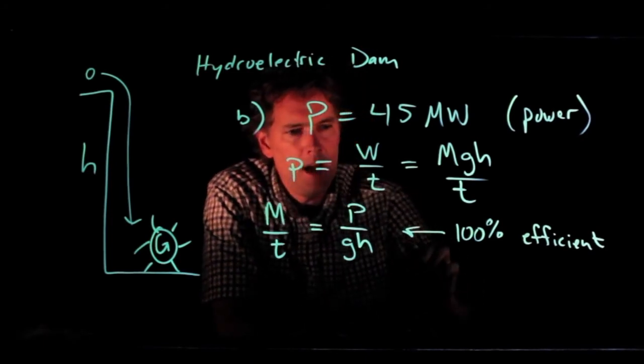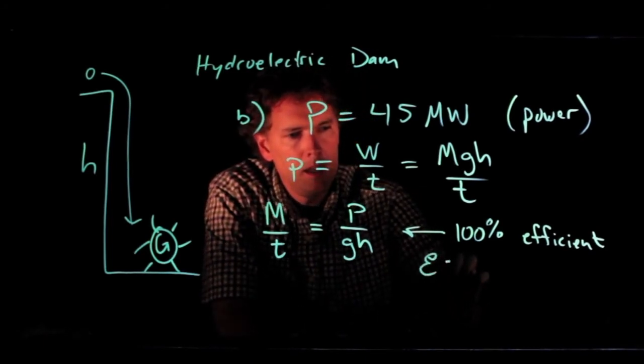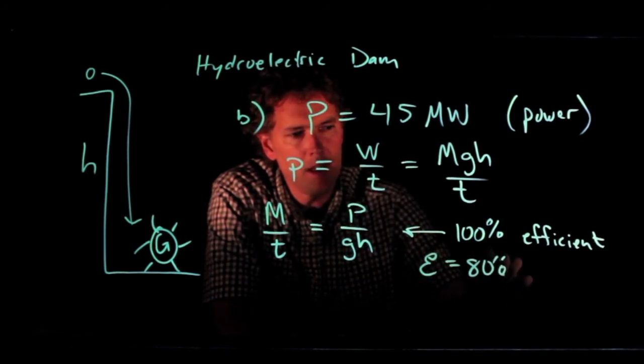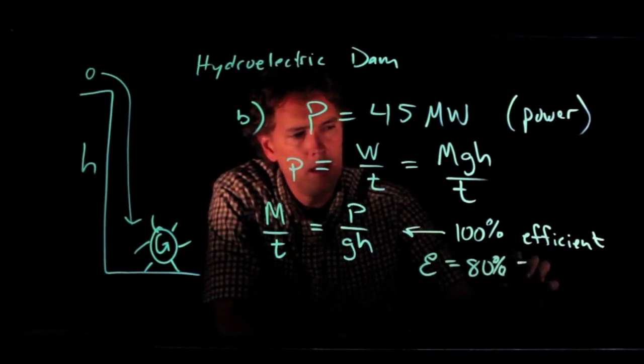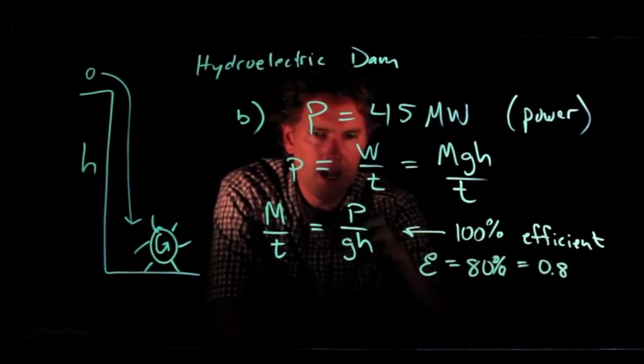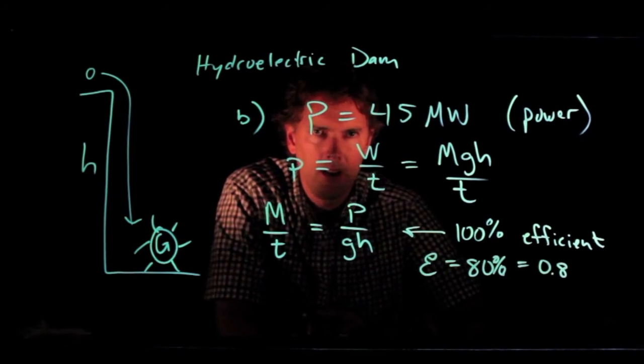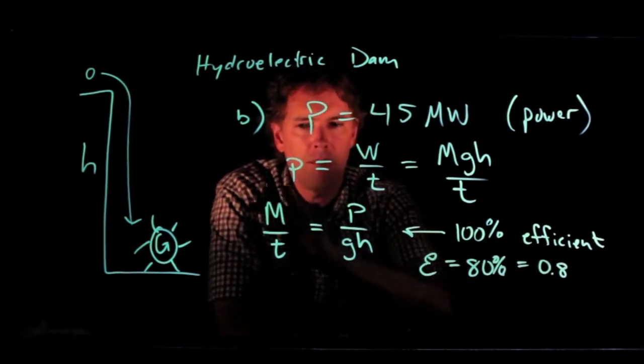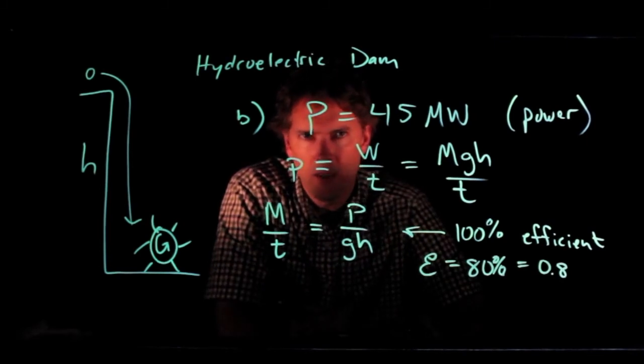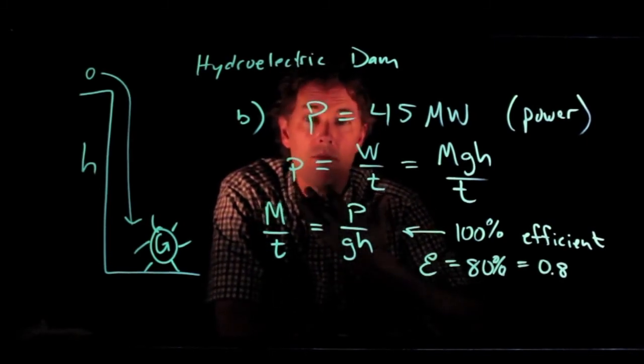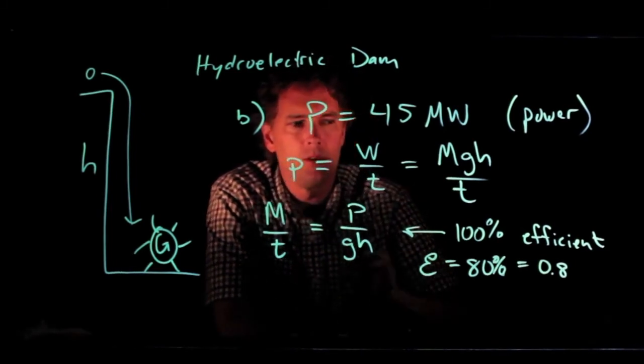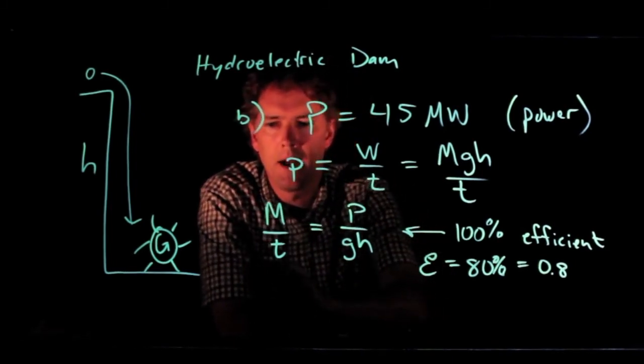So where do we include the efficiency factor? Well, if epsilon is our efficiency factor, and let's say it's 80%, that is 0.8. If I multiply this thing by epsilon, then I would get a smaller mass of water. But we know that can't be the case. We must have to use more water in order to get this amount of power. So we have to divide by epsilon.